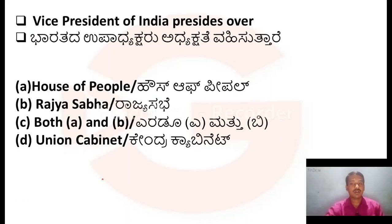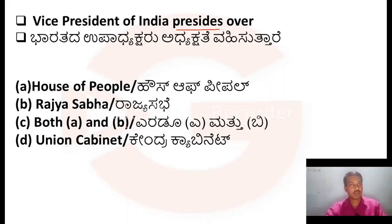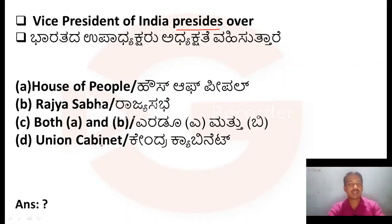The next question is: Vice President of India presides over — Option A: House of People. Option B: Rajya Sabha. Option C: Both A and B. Option D: Union Cabinet. Friends, the right answer — please comment your answer in the comment box. Please don't forget to comment your answer.